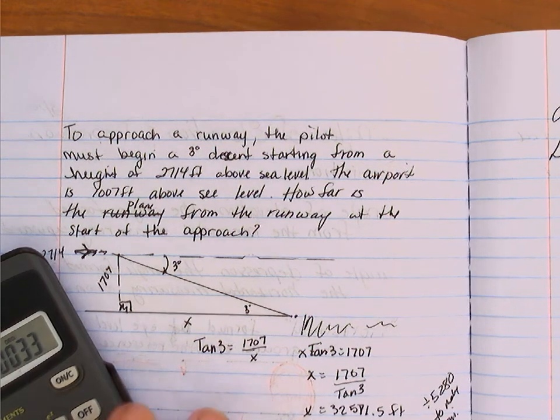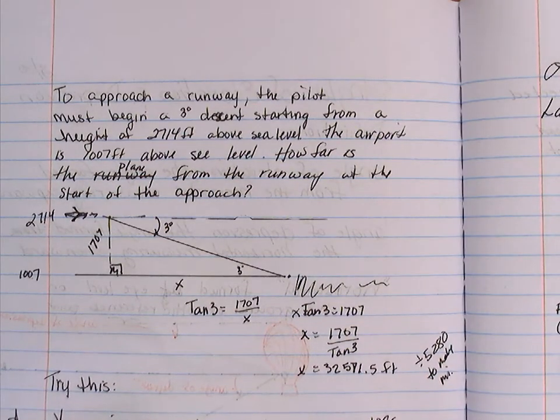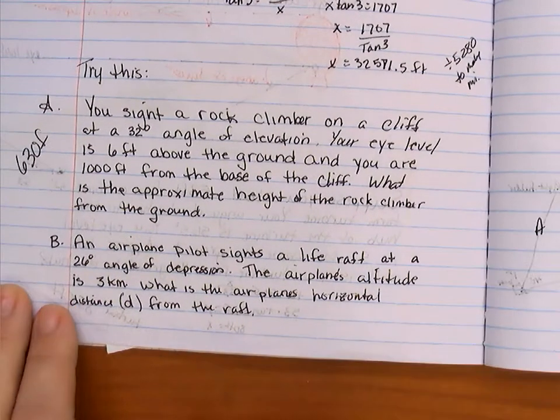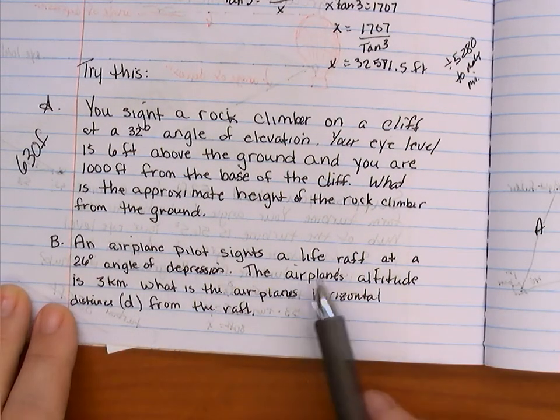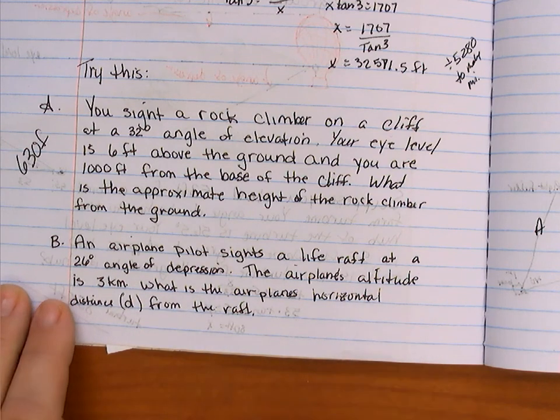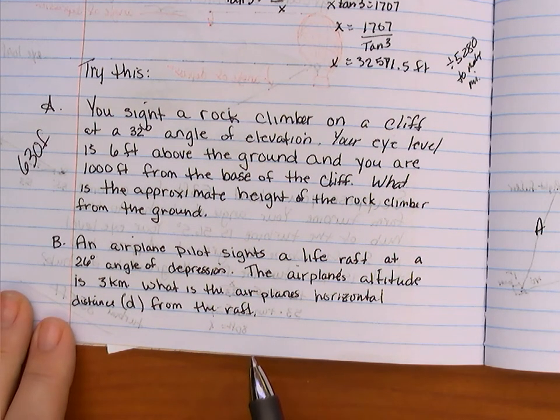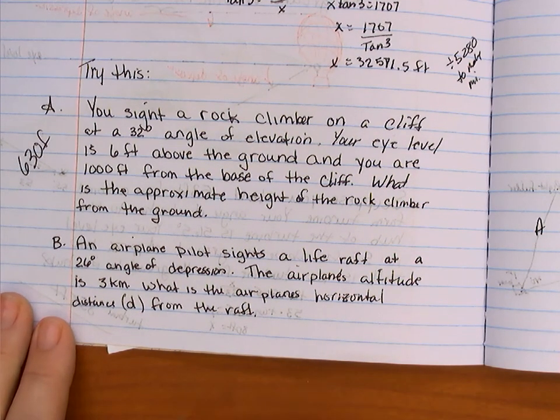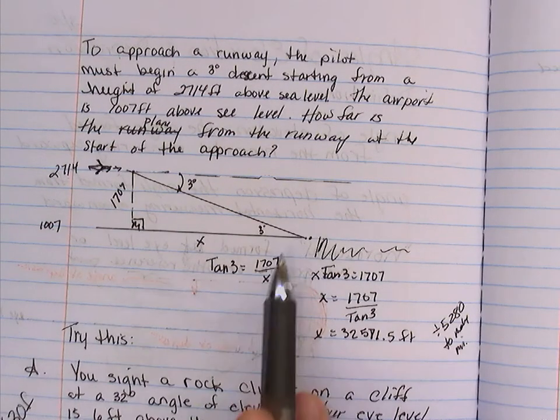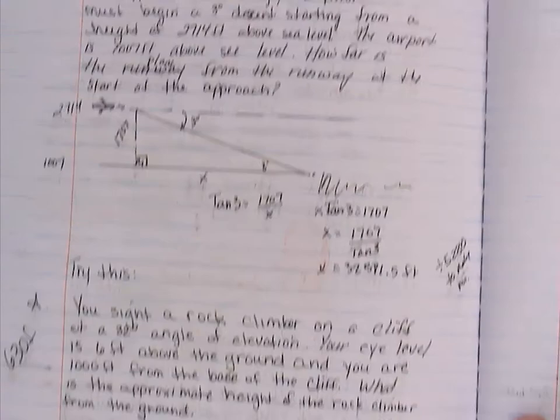If I wanted to change that into miles, I would divide that by 5,280 to make it miles. But that's not necessary because that wasn't part of our question. So, I would like you to give this part B a try. An airplane pilot sights a life raft at a 26 degree angle of depression. The airplane's altitude is 3 kilometers. What is the airplane's horizontal distance from the raft? The horizontal distance from the raft. So when I'm looking for that, I'm looking for this thing right here. How far was the airplane from the raft?